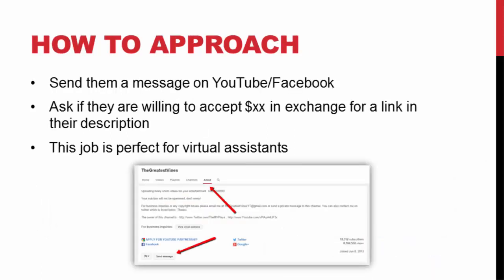Once we find a video that meets our criteria, we want to reach out to them on YouTube, or on Facebook if their real name is on YouTube and we can find them there. We send them a message basically saying: 'Hey, I have an awesome website, I have a free course, a free report that your audience is going to absolutely love. How about I give you 10, 20, or a hundred bucks and you put this link in your video description?'